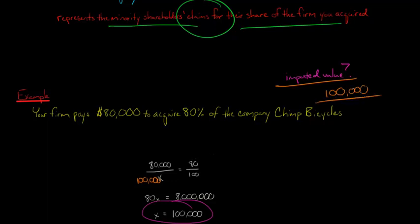That's the imputed value of all of Chimp Bicycles, $100,000. How do we then find the minority interest or the non-controlling interest? If we've got 80%, then they have 20%. The non-controlling shareholders have claims against 20%. 20% of $100,000 would be $20,000.